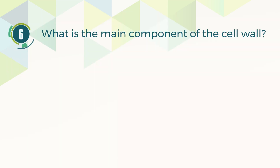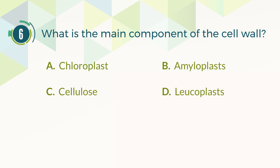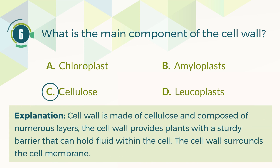Number six. What is the main component of the cell wall? A. Chloroplast. B. Amyloplasts. C. Cellulose. D. Leukoplasts. The correct answer is C, cellulose. The cell wall is made of cellulose and composed of numerous layers. It provides plants with a sturdy barrier that can hold fluid within the cell, and it surrounds the cell membrane.